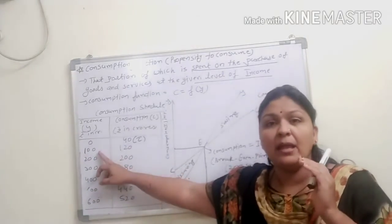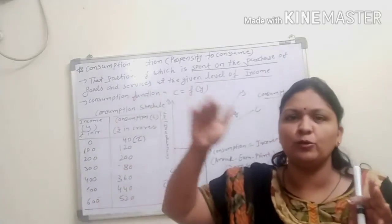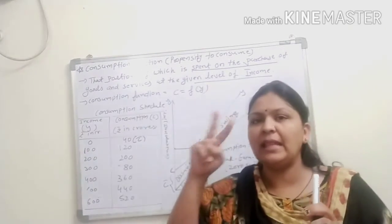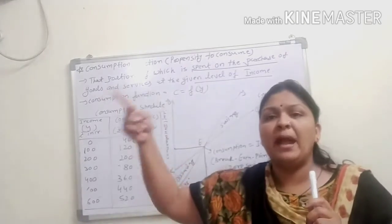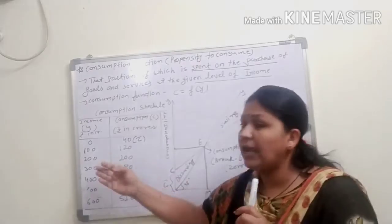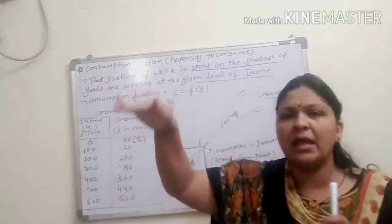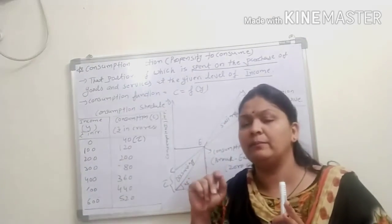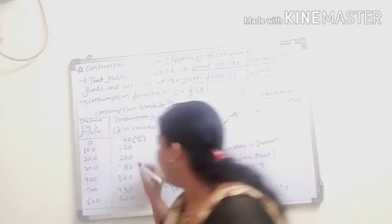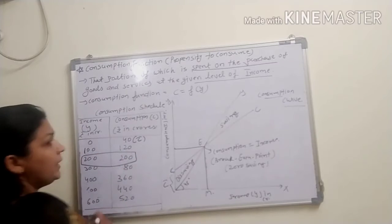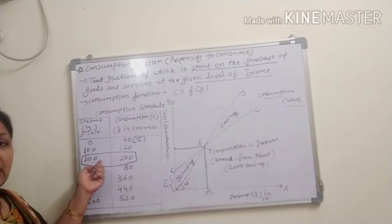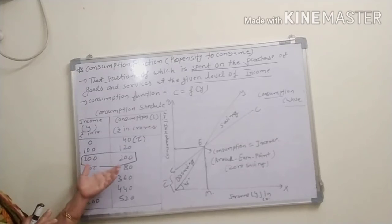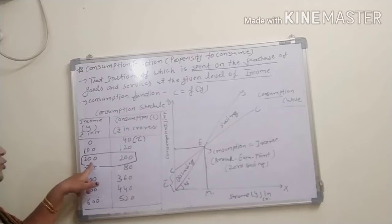When consumer's income increases by 100 rupees — from 0 to 100 — consumption will be 120. Consumption is more than income; that extra 20 rupees the consumer spends using old savings. When income increases again by 100 to become 200, the consumer consumes the entire income — consuming all goods and services worth 200 crore rupees.